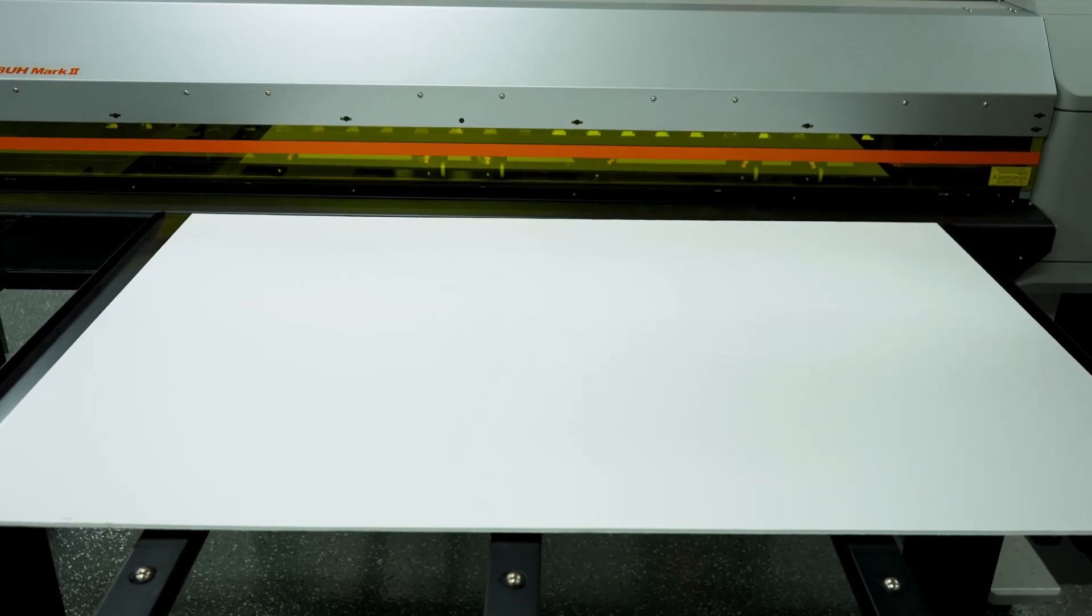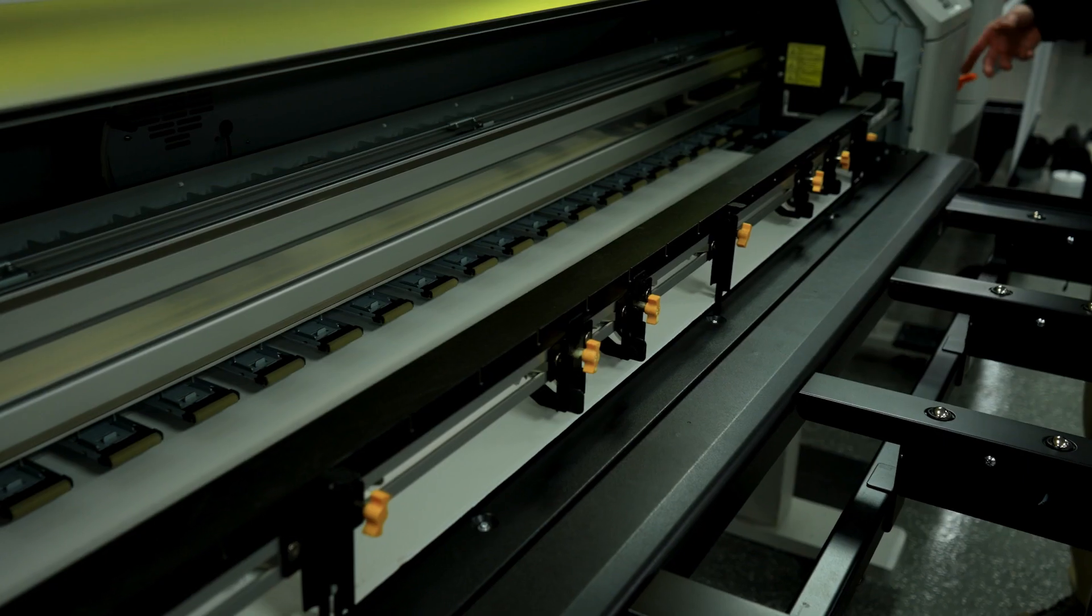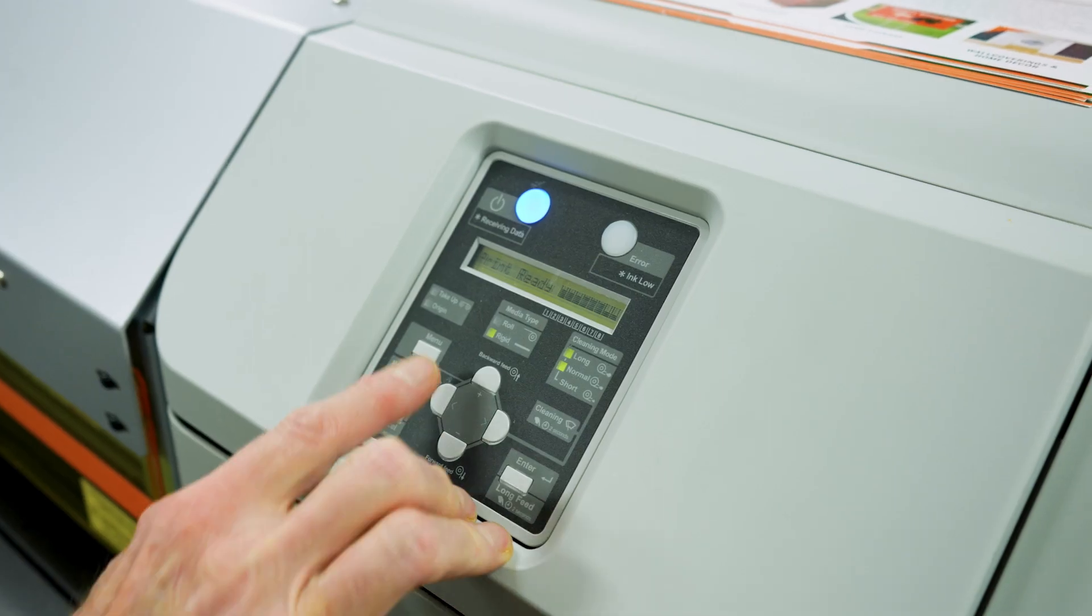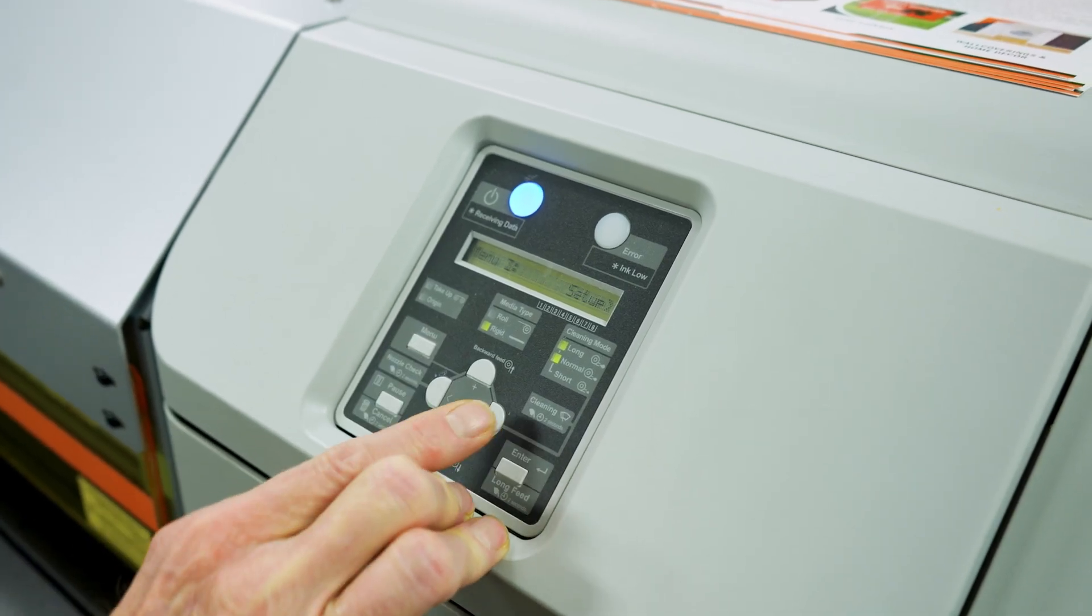First, load your media into the printer making sure it is at least 26 inches long. Go to your menu and select the user type you want to adjust.